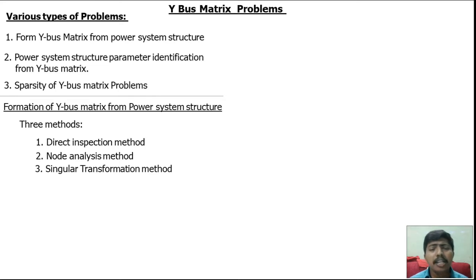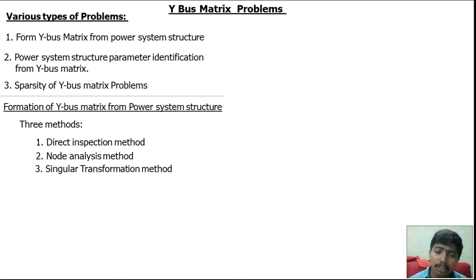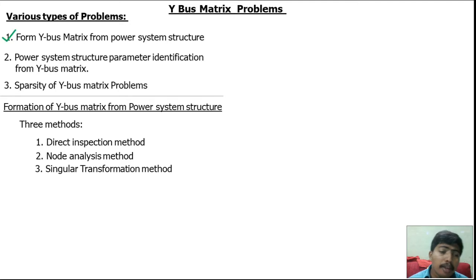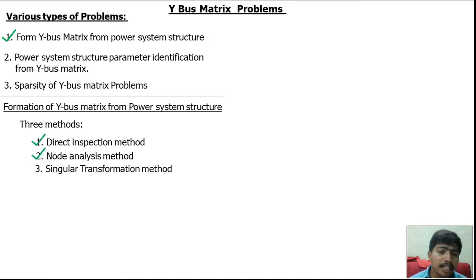If the mutual impedance between two transmission lines is given in the power system network, we cannot use the direct inspection method or node analysis method. So if mutual impedance between two transmission lines is given, we have to use the singular transmission method. In this video we are going to discuss the formation of Ybus matrix from the power system structure using the direct inspection method and node analysis method. The remaining concepts will be discussed in the next videos.